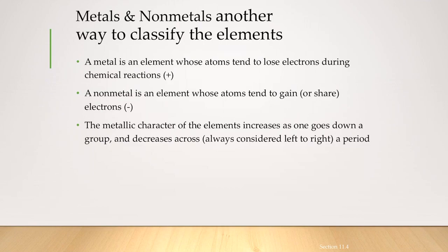Metals and non-metals is another way to classify the elements. A metal is any element whose atoms tend to lose electrons during chemical reactions, whereas a non-metal is an element whose atoms tend to gain electrons during a chemical reaction.